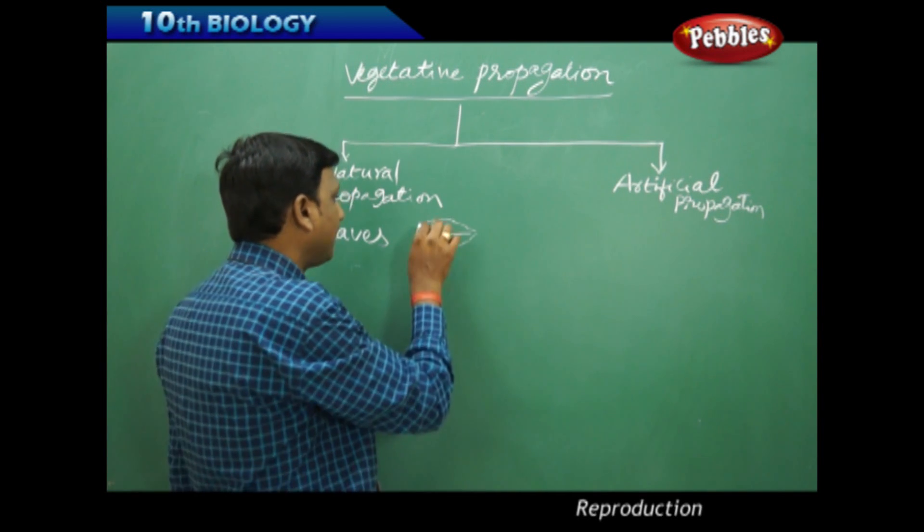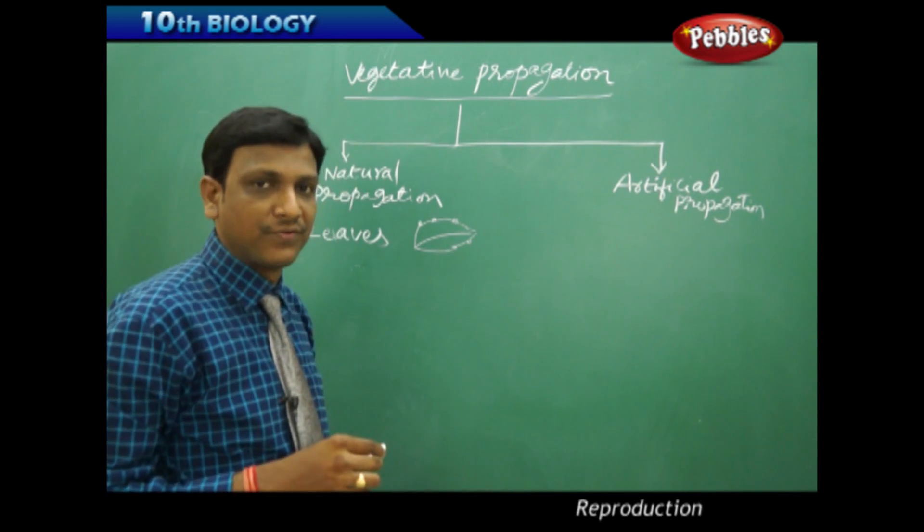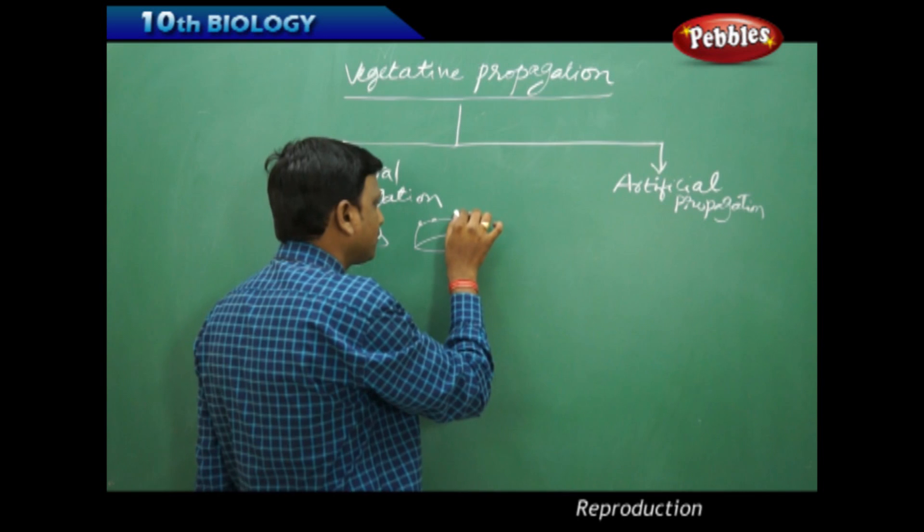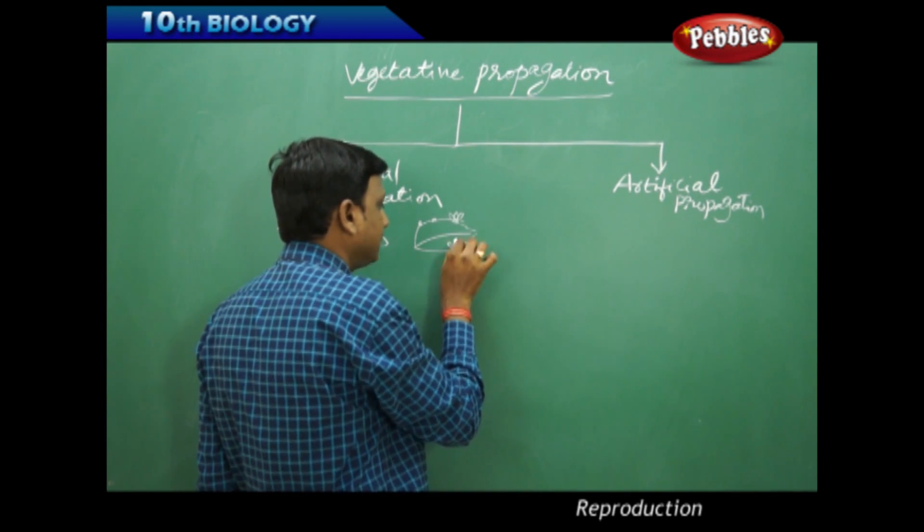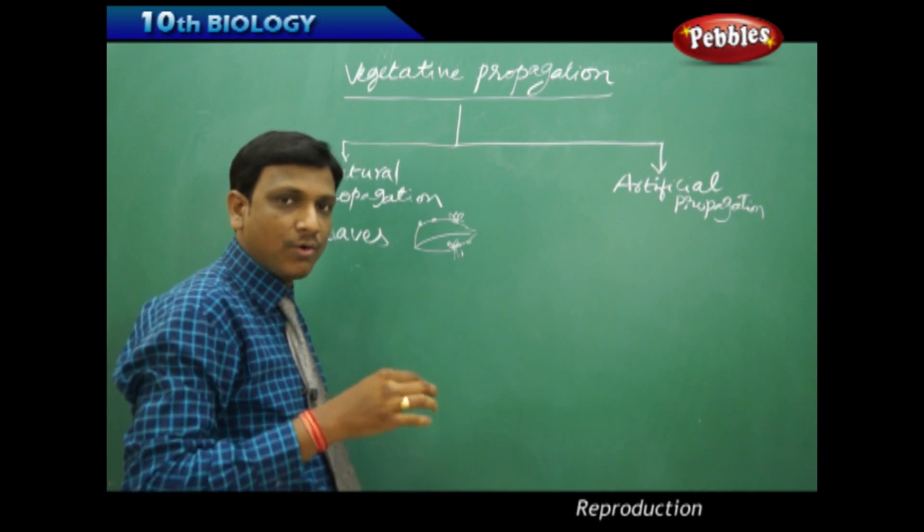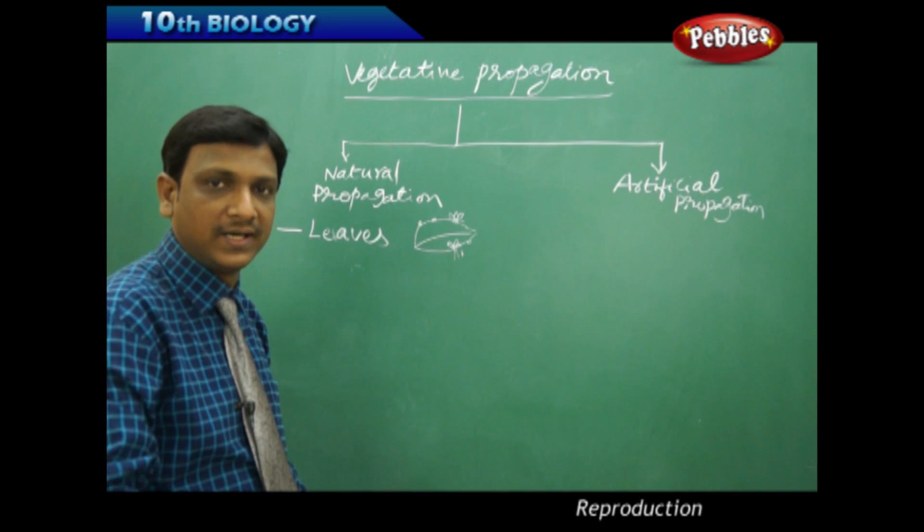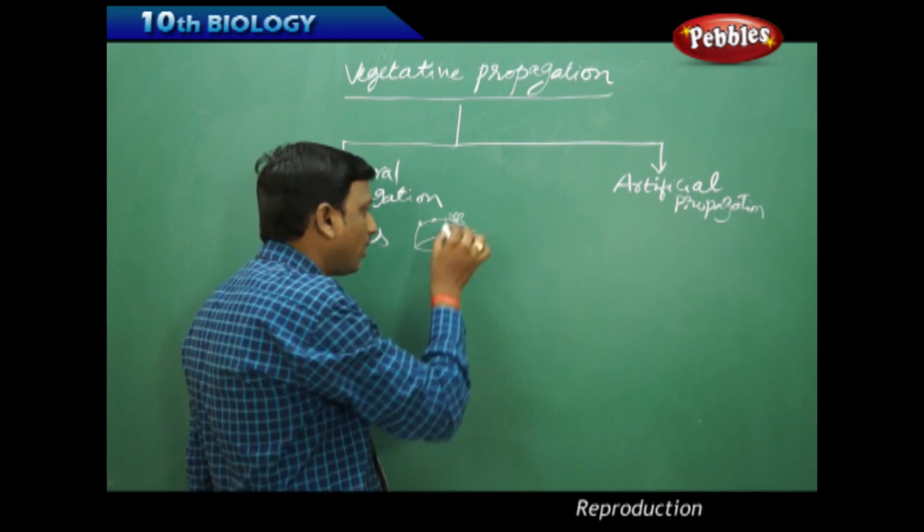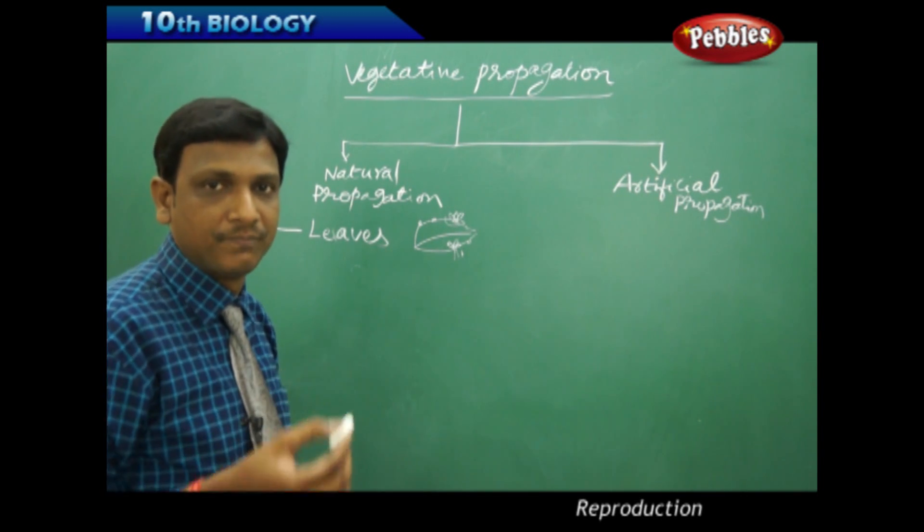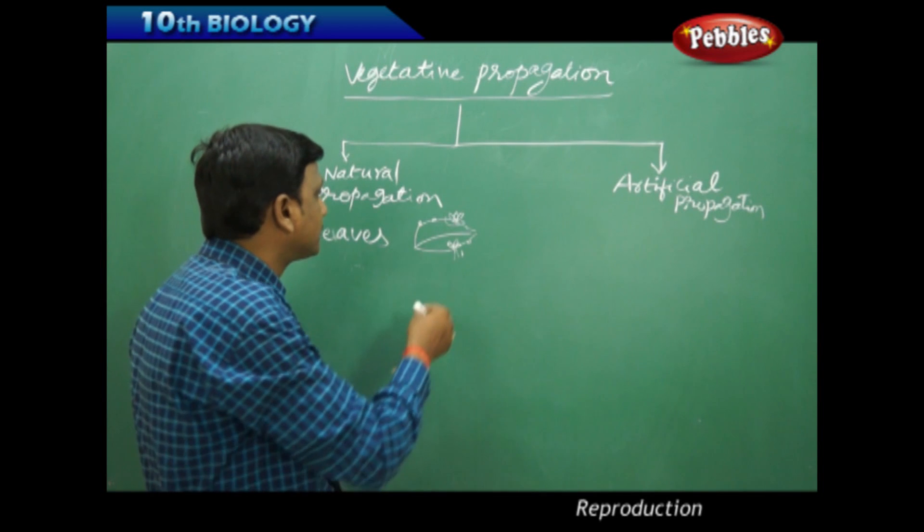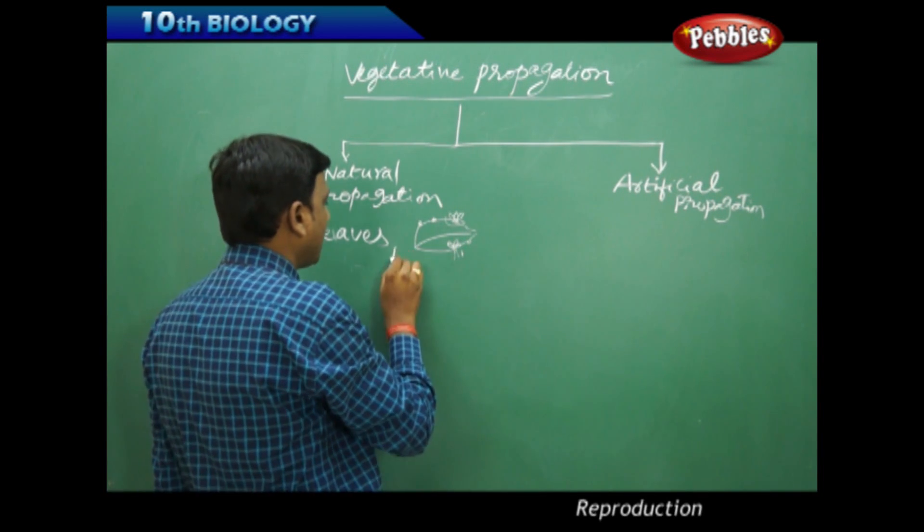The bryophyllum will have leaf buds on the edges of its leaf. From these leaf buds, we will observe small plants arise with roots and small leaves. If they come in contact with the ground, they get implanted, the roots get planted in the soil and it grows into a separate plant. Otherwise, if you cut this small plant with the roots and plant it in the soil, it will grow again. Here the propagation is going on through its leaves, example bryophyllum.